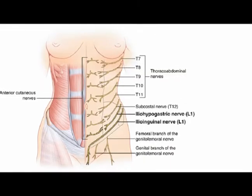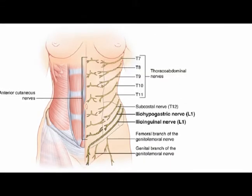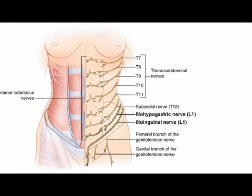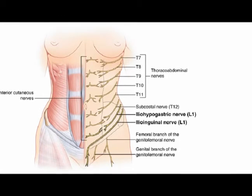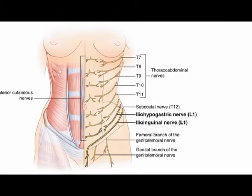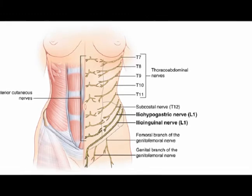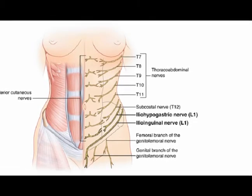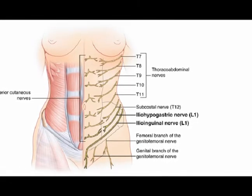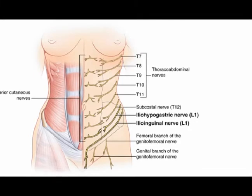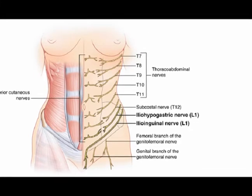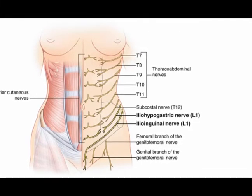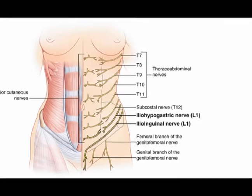The TAs are innervated by several different nerves: the anterior primary rami of T7 through T12, the ilioinguinal nerve, the subcostal nerve, and the iliohypogastric nerve.